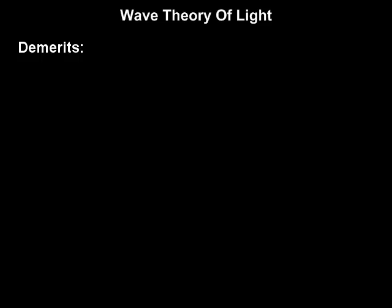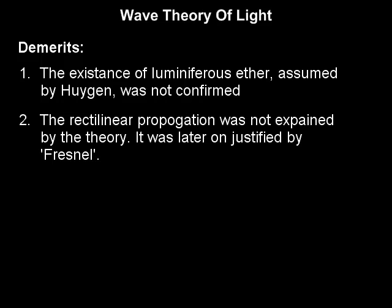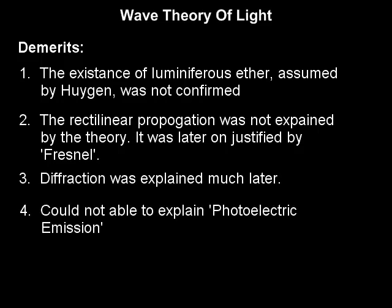Though these two merits were sufficient to justify the theory, there were some demerits also. The first being, the existence of the so-called luminiferous ether assumed by Huygens was not confirmed. The rectilinear propagation was not explained by the theory; it was later justified by Fresnel. Diffraction was explained much later, and this theory could not explain photoelectric emission.